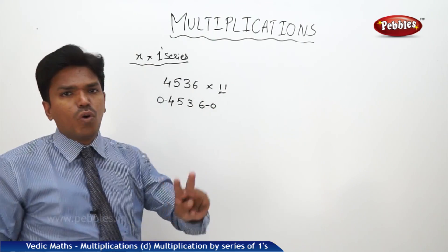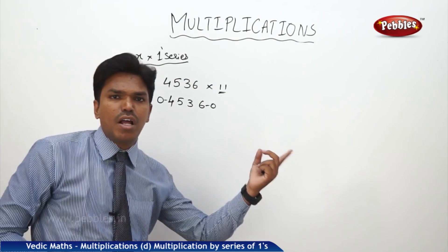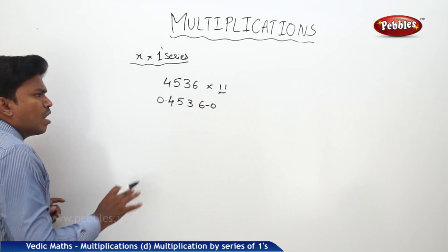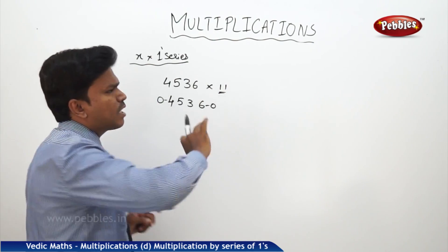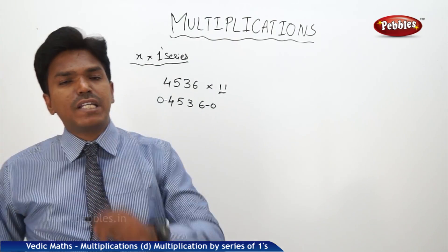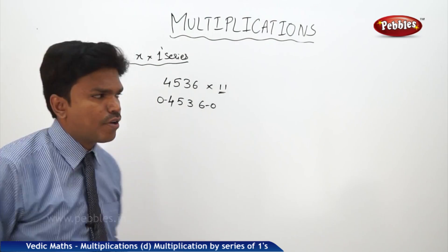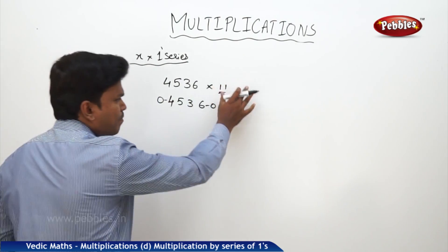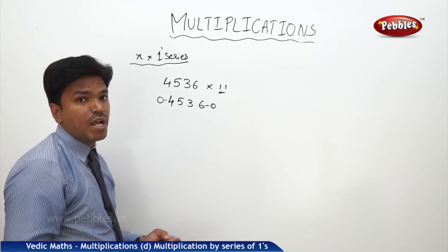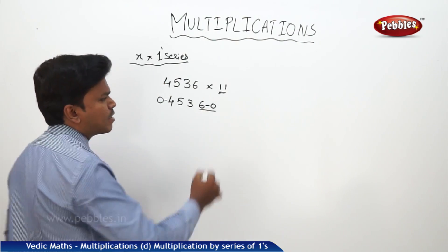Since there are only 2 ones, I added one zero after the number and one zero before the number. Now, since there are 2 ones, maximum you need to add 2 digits at a time in the given number from the right side. So add 2 digits at a time from the right.